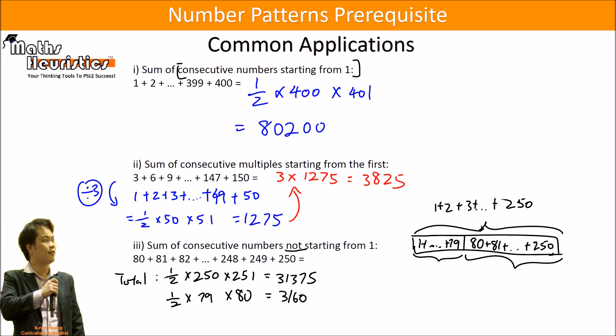So the objective that I'm required to find will be 31,375 minus 3160, and that will give me 38,215.